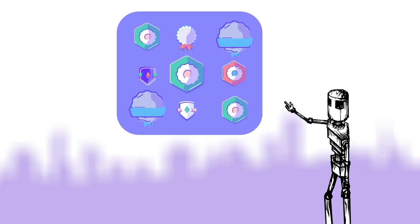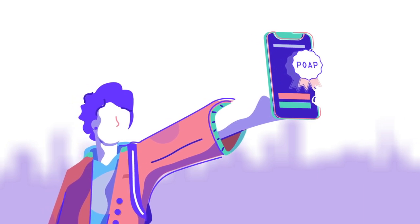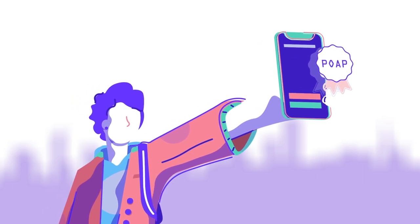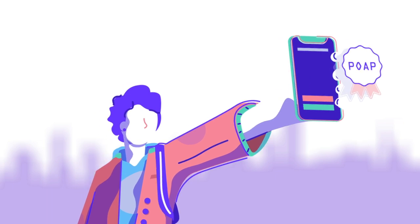So what can one do with a POAP? Firstly, a POAP can be simply displayed by a user to show off the events and groups that they are part of. They could prove that they were at a seminal event that signaled the start of something great. In this sense, a POAP is bragging rights.